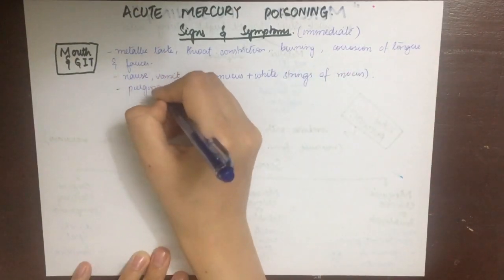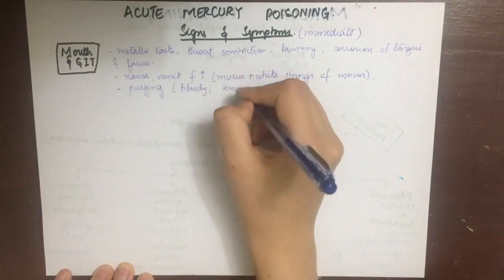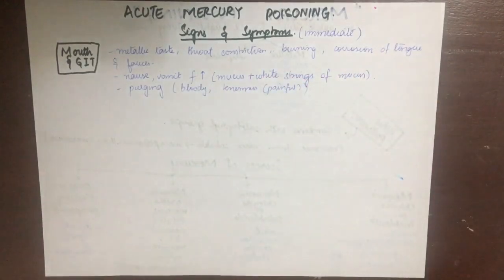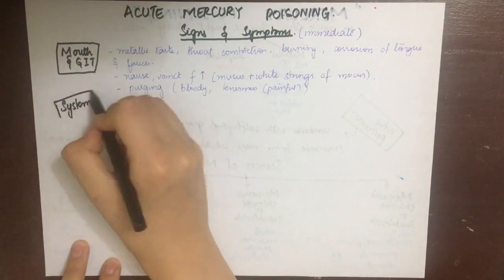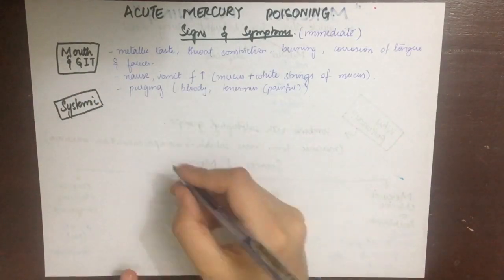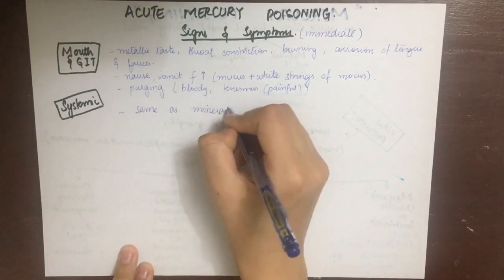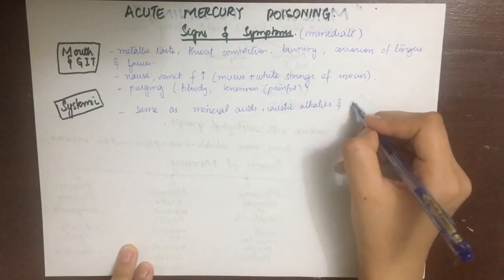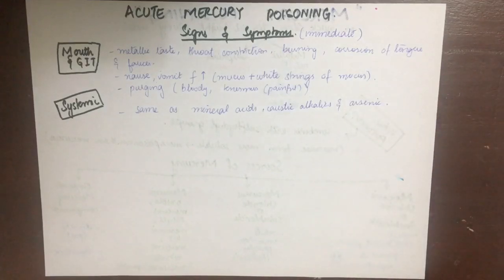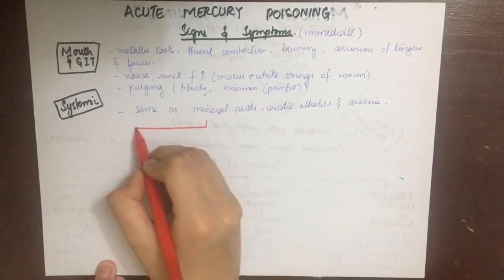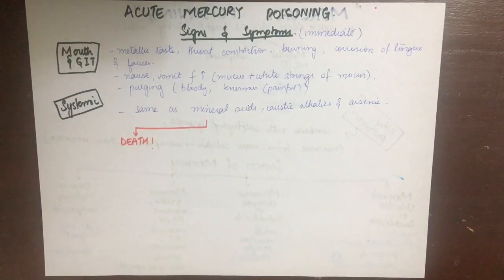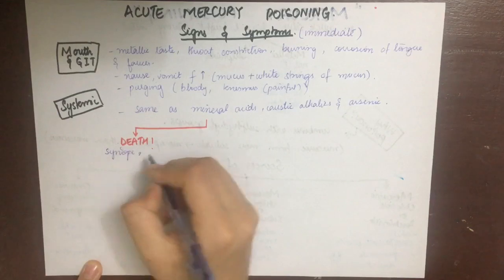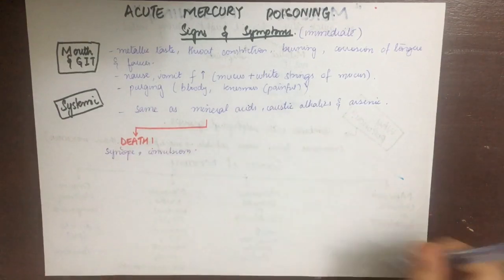There is nausea with frequent vomiting, with white strings of mucus and blood seen in the vomit. There is purging, bloody and painful tenesmus. Systemic symptoms are the same as those of mineral acids and arsenic: collapse, cold clammy skin, pale anxious face, sunken eyes, dilated pupils, rapid pulse, and sighing respirations. Death may occur due to these systemic symptoms.